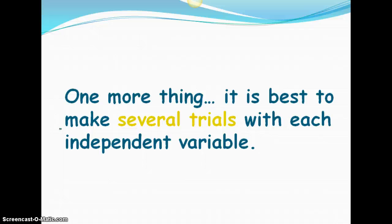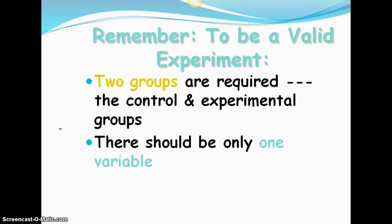So one more thing, it's best to make several trials with each independent variable to make sure that your results are valid. And we also want to make sure that when we're setting up an experiment, we have two groups. The control group, which has no independent variable, and the experimental group, which is the one where we add that one independent variable. We have to make sure that we are also maintaining great records so that we have good results in the end.